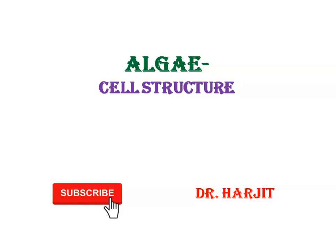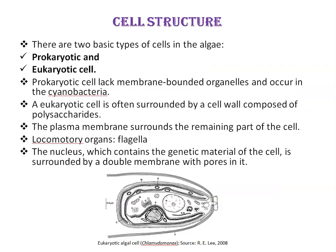Today, we will be discussing cell structure of algae. There are two basic types of cells in the algae: prokaryotic and eukaryotic cells. Prokaryotic cells lack membrane-bounded organelles like plastids, mitochondria, nuclei, Golgi bodies, and flagella, and occur in the cyanobacteria. The remainder of the algae are eukaryotic and have membrane-bounded organelles.